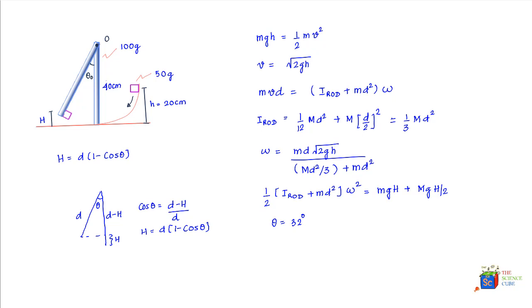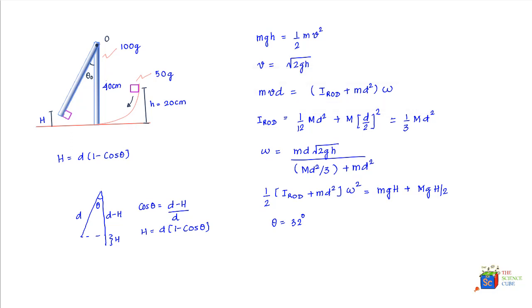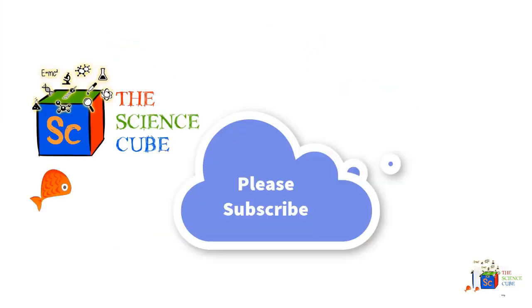We then applied conservation of angular momentum — the angular momentum of the block before impact equals that of the block-rod system — to find omega. Since the system possessed omega, it had kinetic energy, which again converted into potential energy as the system moved up. We applied conservation of energy to equate kinetic energy with the potential energy gained by the block and rod, and finally found theta by substituting the expressions for v and omega into the energy equation.